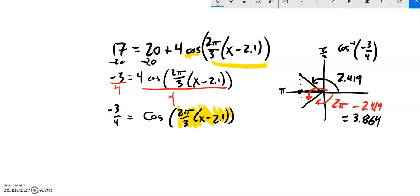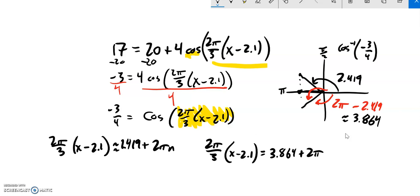Okay great. So that means that this 2π/3 whatever this is must equal, and I'll say about because I've done some rounding now, about this first one 2.419 plus that full rotation 2πn, and then it also equals this other one 3.864 plus the period, a bunch of rotations, a bunch of co-terminal angles for it.